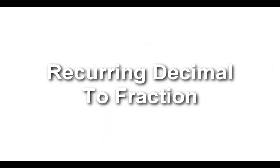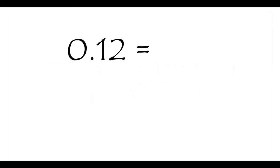We're going to look at how to change a recurring decimal into a fraction. We'll start by looking at how a normal decimal would be turned into a fraction, then work from there. Starting with 0.12, you might be aware that to change this into a fraction it's going to look like 12 hundredths.